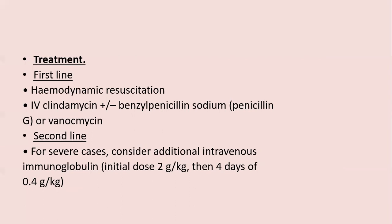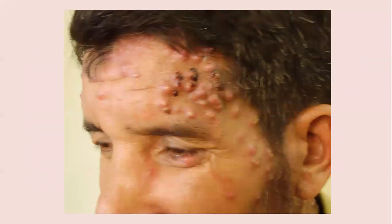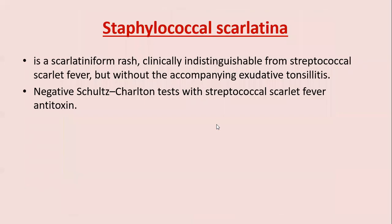Periporitis staphylogenes is secondary infection with Staph. aureus of miliaria — an infection of the ostium of the sweat glands — and should not be confused with folliculitis or furunculosis. Pustular miliaria is itself sterile; the pustules are perifollicular and not centered on hair follicles. These pustular lesions, also known as 'cold folliculitis,' are not hot and tender like bacterial folliculitis; they occur in the summer season with a background of miliaria. Staphylococcal scarlatinina is a scarlatiniform rash clinically indistinguishable from streptococcal scarlet fever but without accompanying tonsillitis; there is a negative Schultz-Charlton test with streptococcal scarlet fever antitoxin.